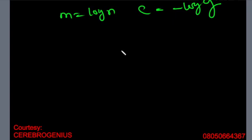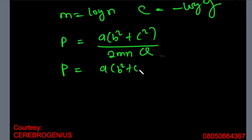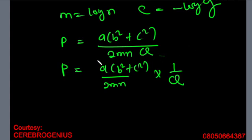That covers almost everything you might be given, but it's not every time that you use logarithm to linearize. For example, if you have p = (b² + c²)/(2mn) · (1/q), you don't have to use logarithm. You separate q and write it as p = (b² + c²)/(2mn) × (1/q). This is already in the form y = mx + c — you can recognise it directly. You can use logarithm and treat it as q^(−1), but you don't need to.